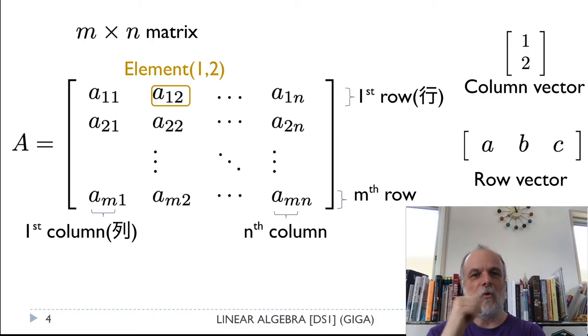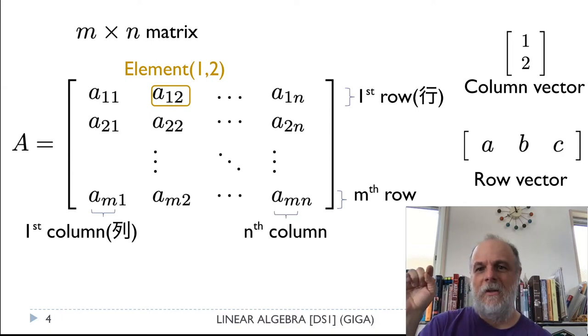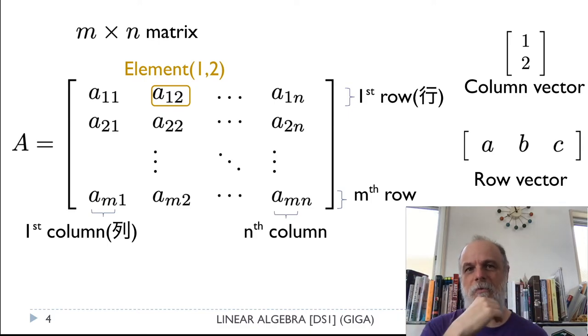You can see I've circled in gold there the entry one two. So we say that's the element one two of the matrix. I hope that's clear enough. On the right side in the upper right you can see I've also written vectors as both a column vector and a row vector with two different notations in them or two different types of elements. The column vector has numbers, numeric entries, and the row vector has variables in it, a, b, and c, but it doesn't matter.